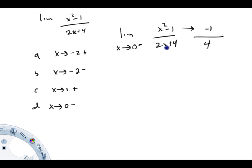The bottom is going to 4 because 2x plus 4, as x goes to 0, goes to 4. Minus 1 fourth. And there's our limit. Done. So I hope this video helps demonstrate how to take these one-sided limits of a rational expression. Have a great day.